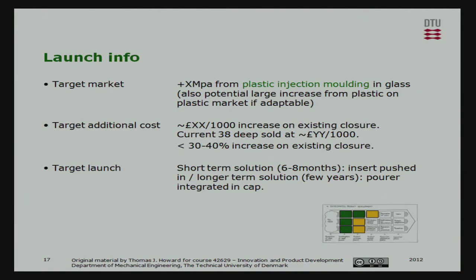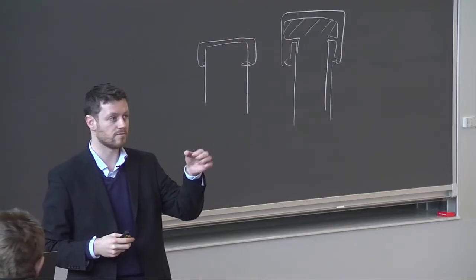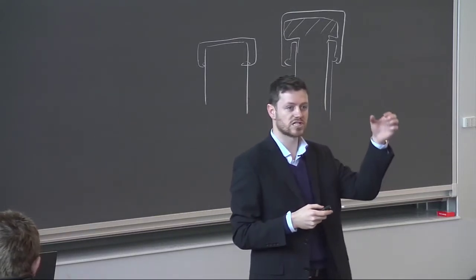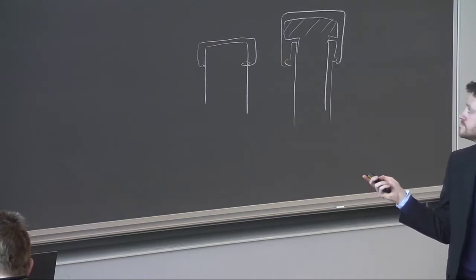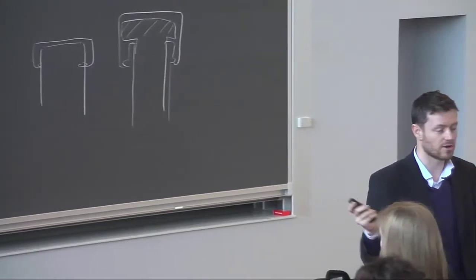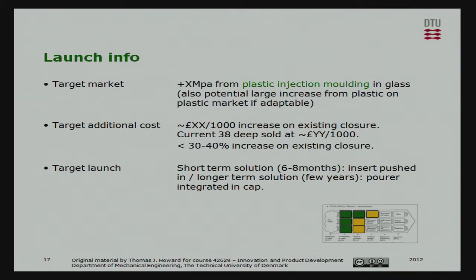The target market is X million units per annum. Looking at plastic injection molding in a glass product — at the brief stage, the production system is already set. The additional cost puts a limit on the market, saying what the function is worth to customers. They said X per thousand produced per year increase, which worked out to about a 30% to 40% increase — meaning for an extra 30–40%, they'll sell a cap with the drizzle function. The marketing department said that is essentially what the drizzling function is worth to the market. They had two target launch dates: a short-term project of six to eight months, and a longer-term solution over a few years with more longevity.